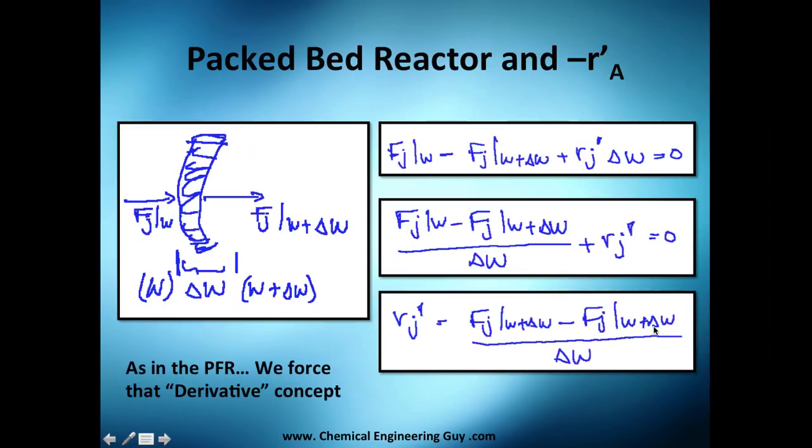So what do we do now? We force again the derivative. If you have any doubts what we're doing, go check out the previous video of the PFR, plug flow reactor. We do the same thing. So we got inlet minus outlet plus the generation equals zero because there's no accumulation. So what I'm going to do is divide by delta W. This one goes away and this got like this, so that's why I got this one. Now I'm going to pass this one here and I get this value here.